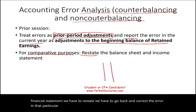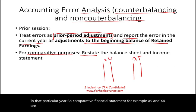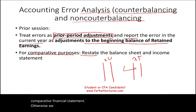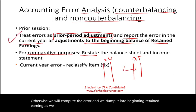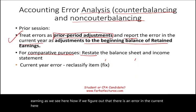For comparative financial statements, for example X5 and X4 are comparable, we have to go back and fix them. Otherwise, we will compute the error and dump it into beginning retained earnings. Now, if we figure out there is an error in the current year, that's easy — we simply fix the current year error and make an adjustment.